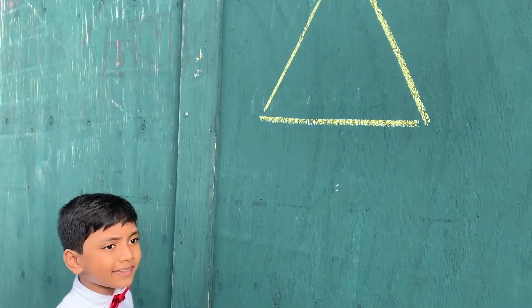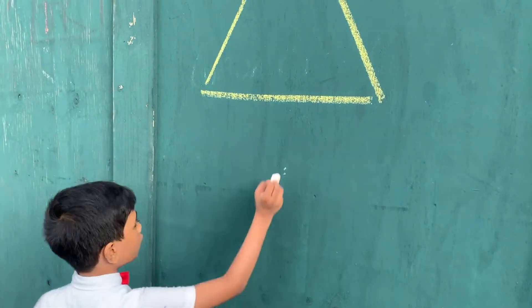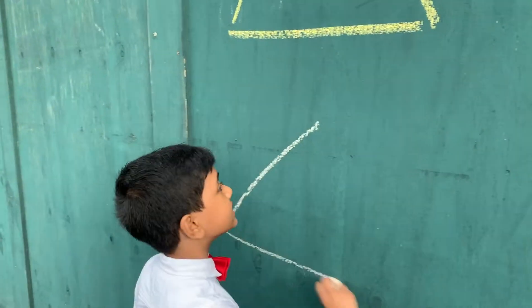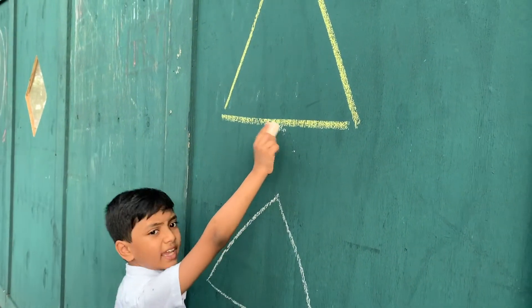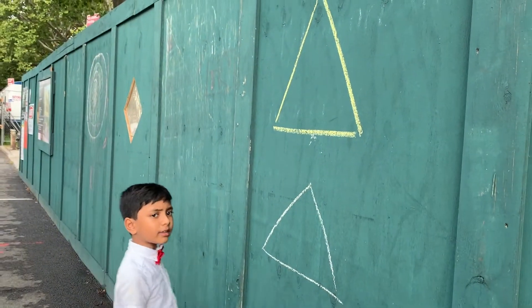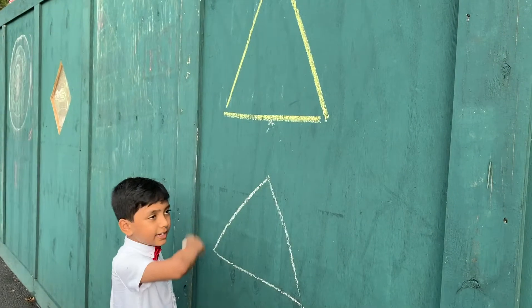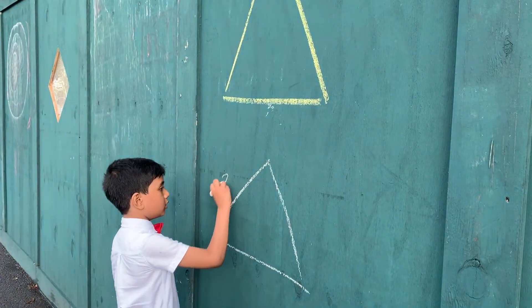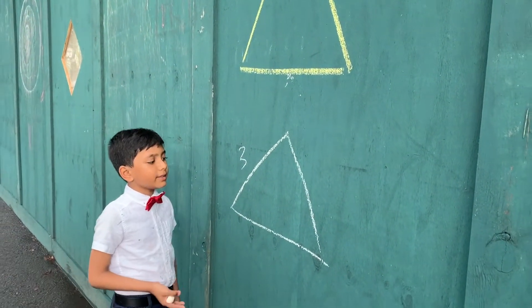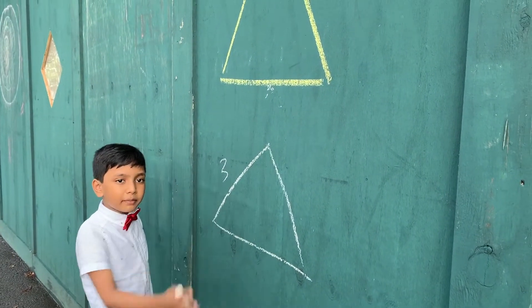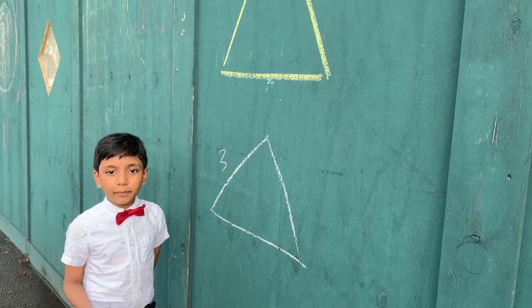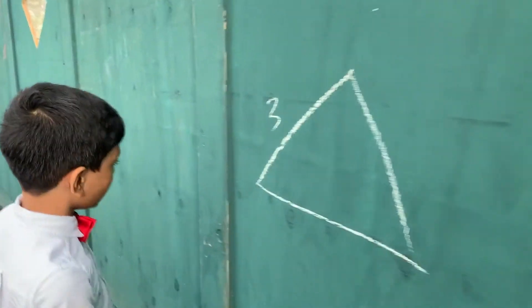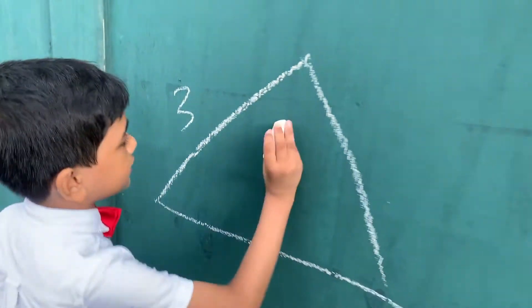Let me start by asking you a question: what is the sum of all the angles in a triangle? Here we have a triangle with a side length of three. I'm going to give you three seconds to think about the sum — three, two, one. All right, so that should be three seconds.